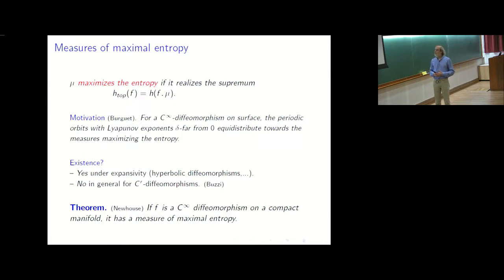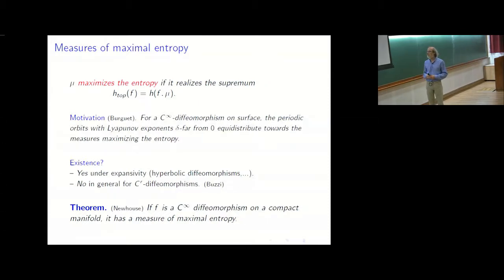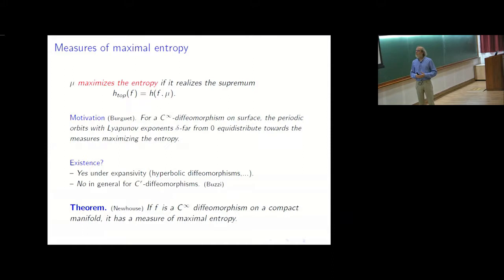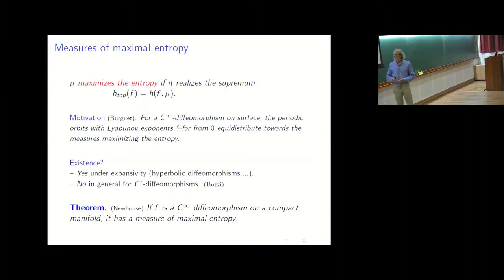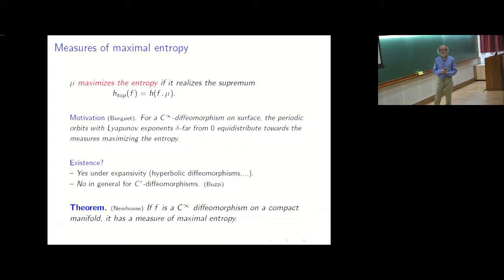In general, when you have a C^r map or are in higher dimension, you may wonder if these measures always exist. It is well known that this is the case when you have enough expansivity — in particular for hyperbolic diffeomorphisms. In general, when you only have C^r, it may not exist; there are counterexamples given by Jérôme Buzzi on surfaces. There is a well-known result by Newhouse saying that if you are C^∞, for diffeomorphisms on a compact manifold it always exists.